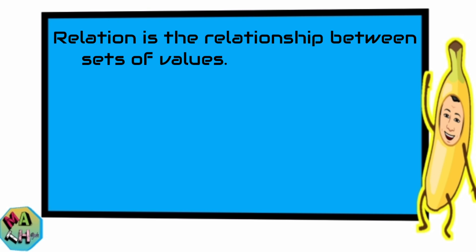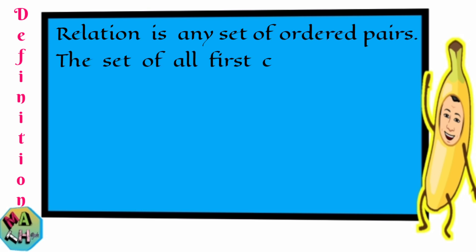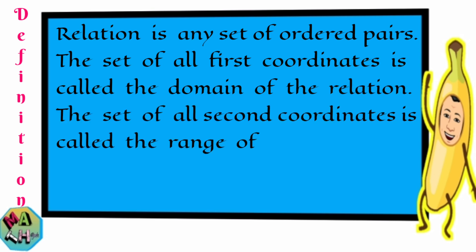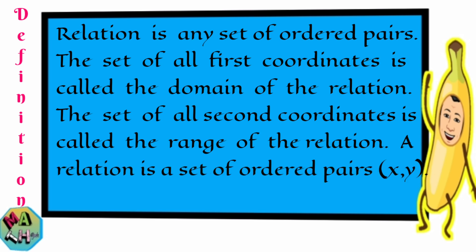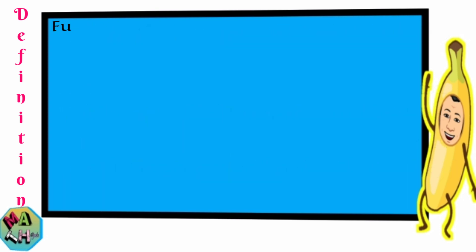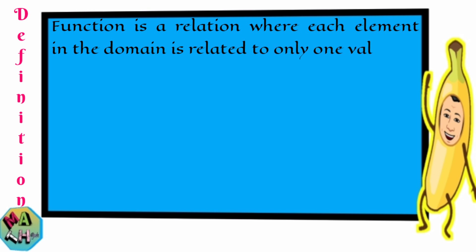Let me read to you the definition of relation first, then function. A relation is any set of ordered pairs. The set of all first coordinates is called the domain of the relation. The set of all second coordinates is called the range of the relation. So a relation is a set of ordered pairs (x, y).